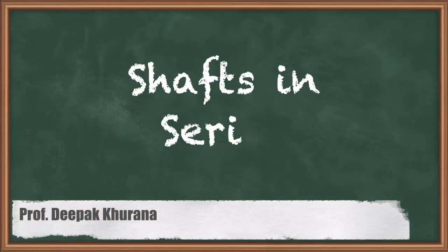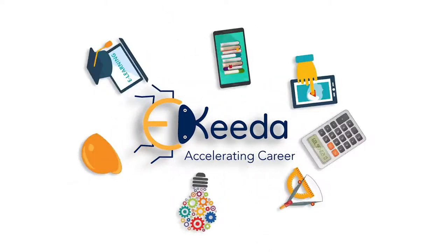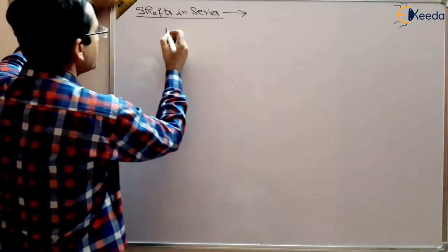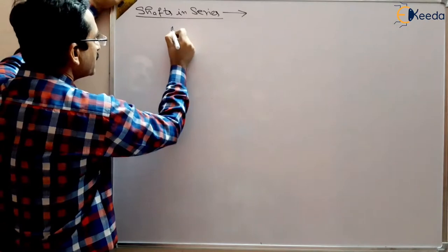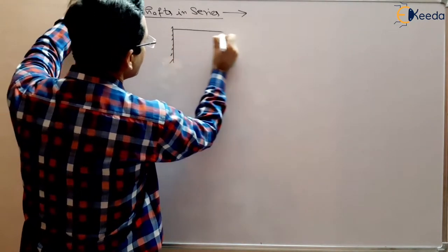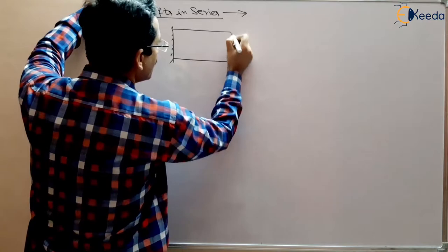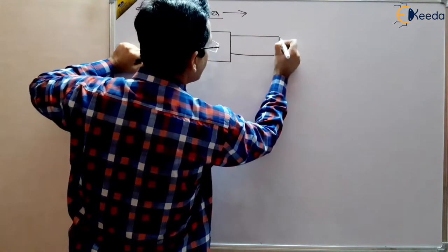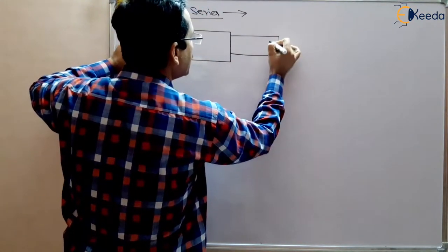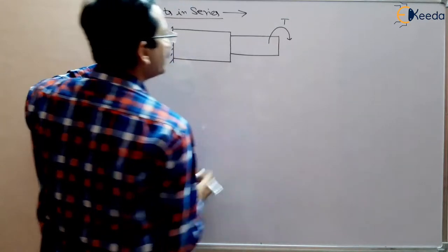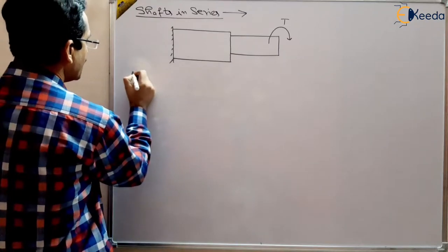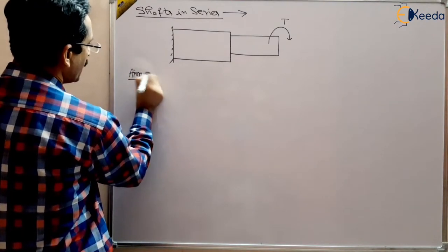In this session we are going to study shafts in series. Shafts in series means there are different diameter shafts — this is a different diameter, different cross-section area, and this is another shaft of different diameter. There is a torque applied at one end, suppose T, and we want to find out the angle of twist.